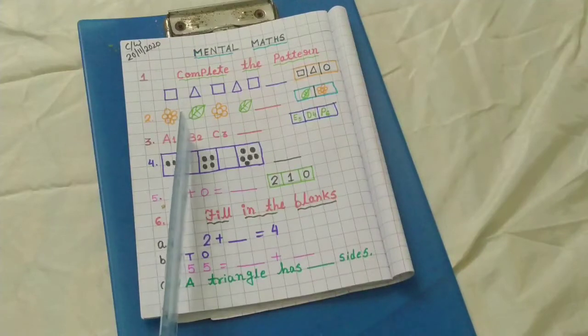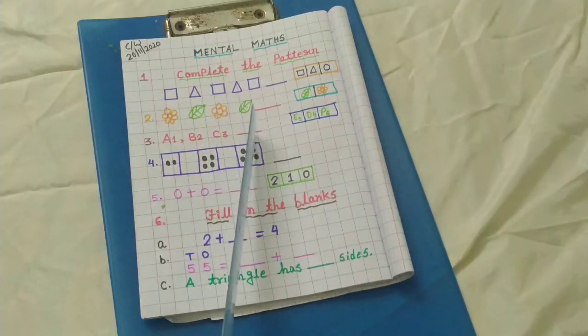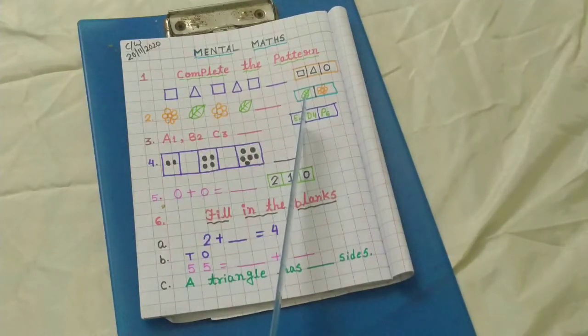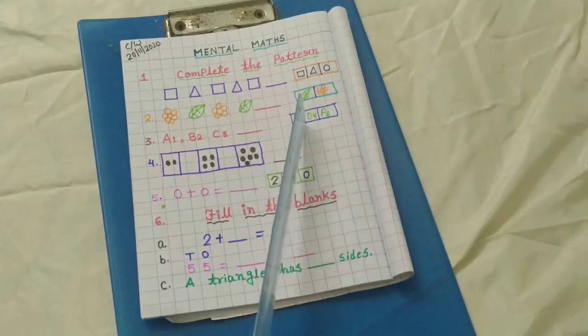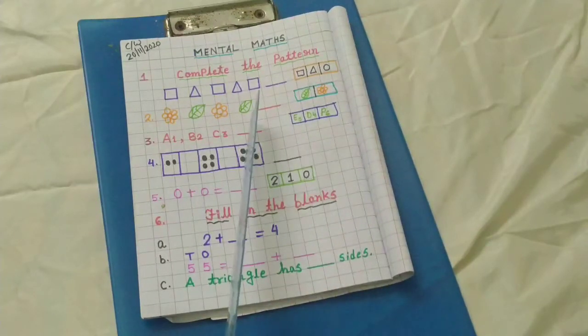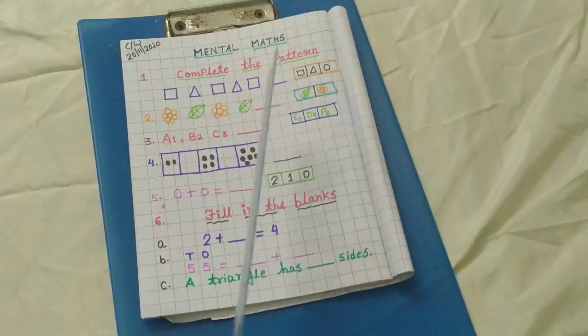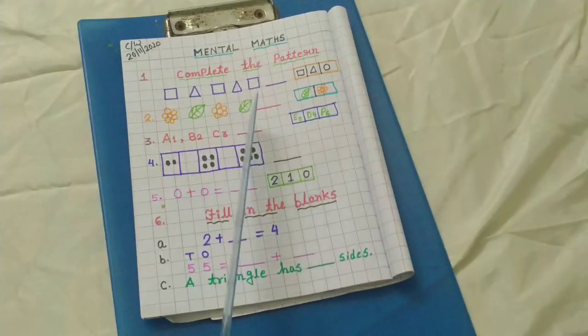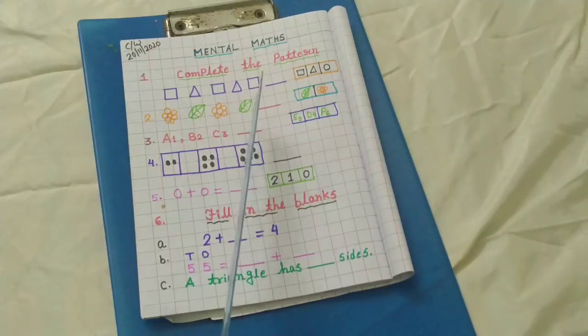A1, B2, C3, and then I have given one dash. Your options are E5, D4 and P6. So which option will come here? You have to think about it and write your answer here.